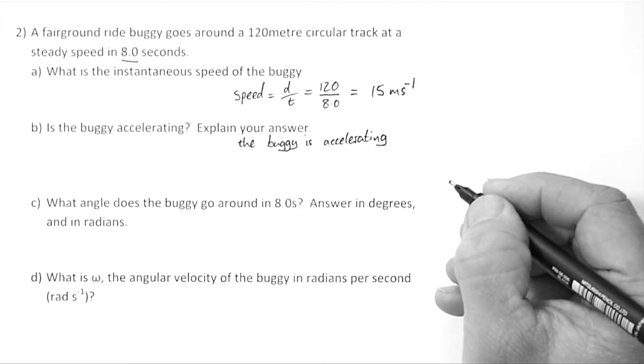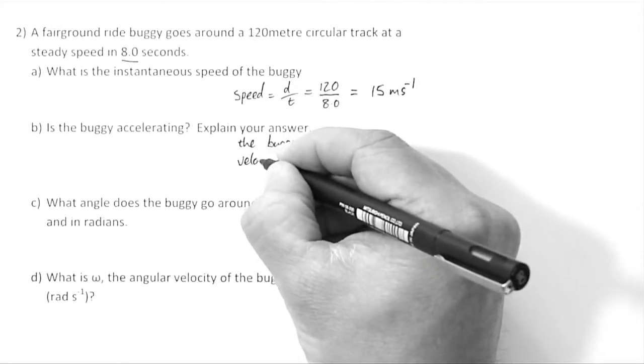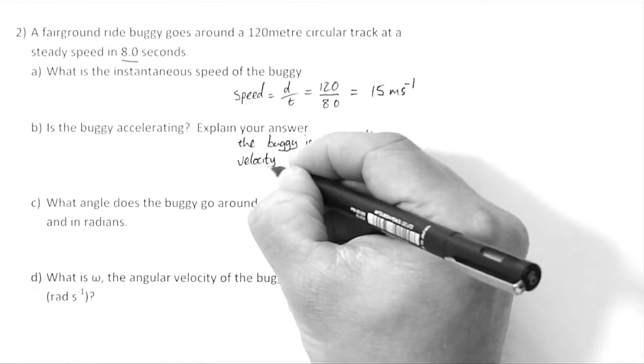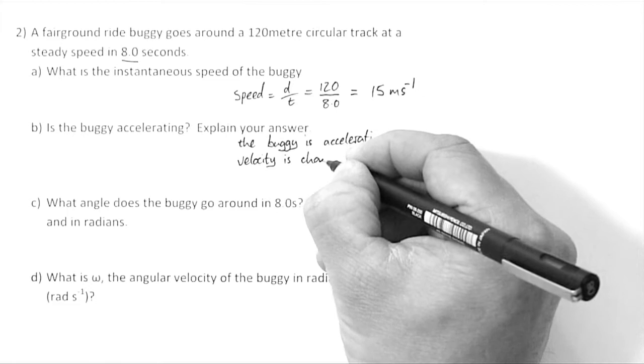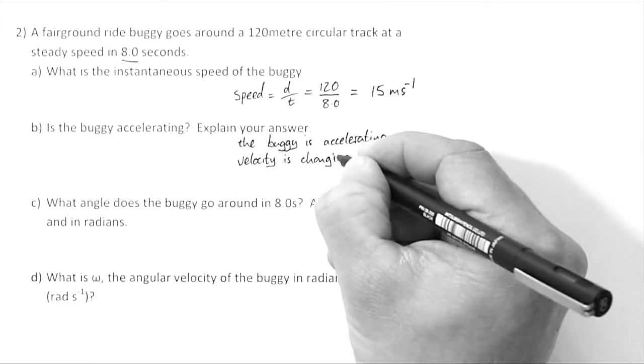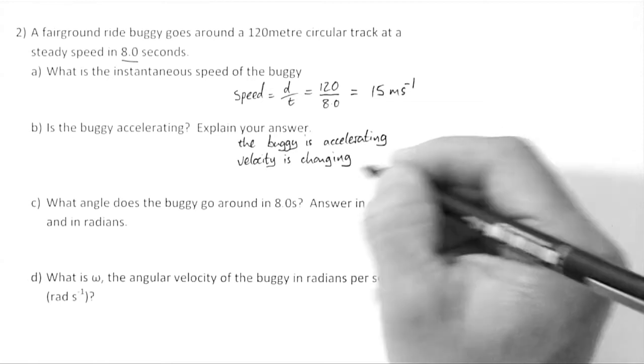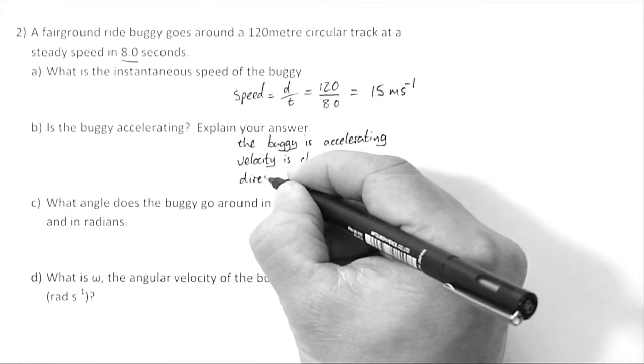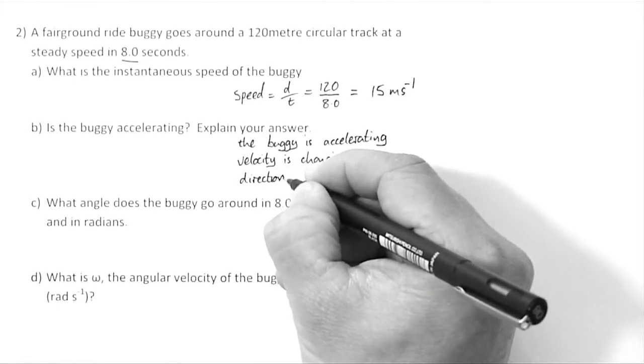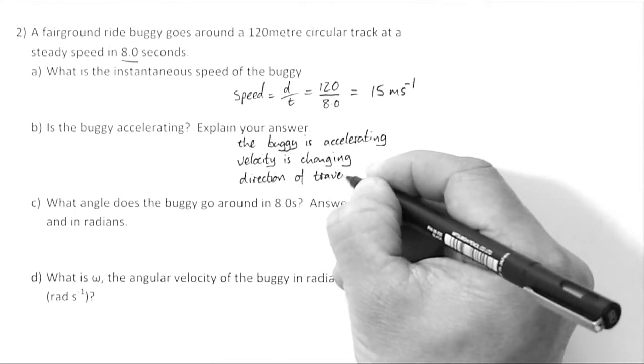Accelerating means that the velocity is changing. But how is the velocity changing if the speed is steady? Well, it's because the direction of travel is changing.